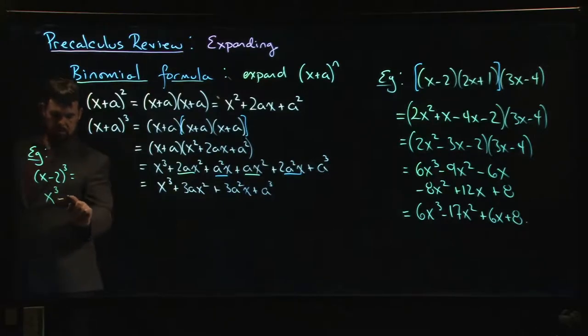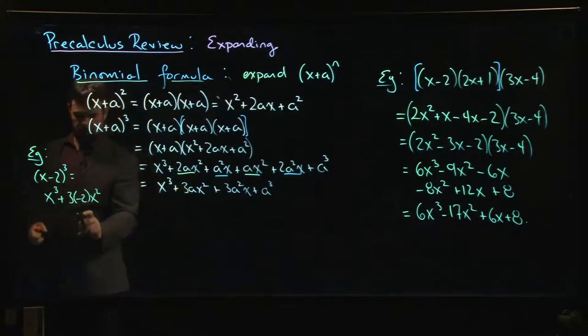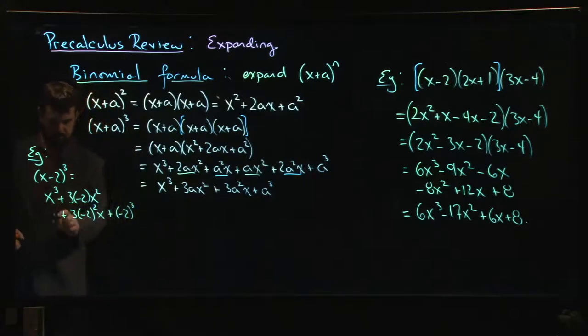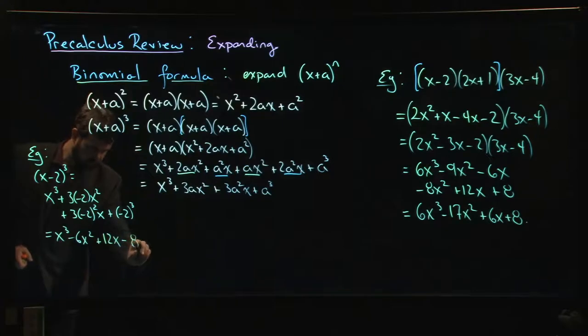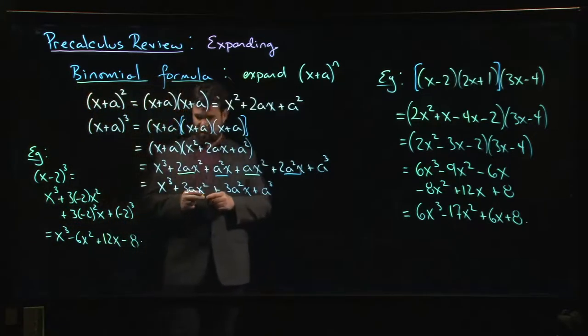It's x³ plus 3 times (-2) times x², plus 3 times (-2)² times x, plus (-2)³. Now you want to simplify. We have x³, then 3 times (-2) is -6, so x³ - 6x². Squaring -2 gets rid of the negative—that's 4 times 3, which is 12x, minus 8.